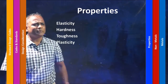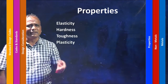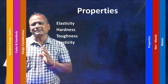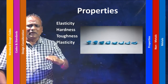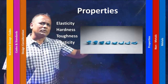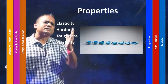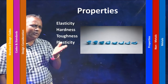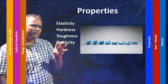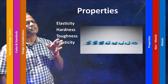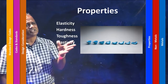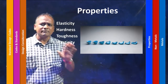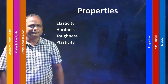Next would be plasticity, which is quite opposite to elasticity. Plasticity is when you put a load and the material does not regain back its position — there is a permanent change in shape. That property is called plasticity.